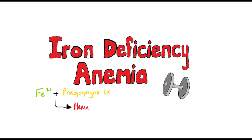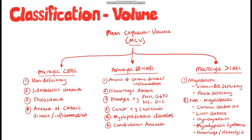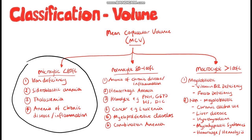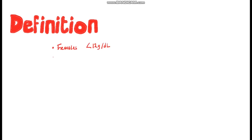Iron deficiency anemia is the most common form of anemia. Iron deficiency is a form of microcytic anemia, so we expect to see a mean corpuscular volume of less than 80 femtoliters. The definition of anemia itself is a hemoglobin level below 12 grams per deciliter in females and 13.5 grams per deciliter in males.